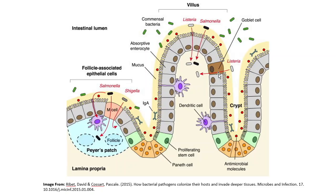Then we have the microbiome. You'll see up here it says commensal bacteria — that's what all these little green things are. That's all the good bacteria that live around and in your lumen of your intestine. That's your microbiome. Those bacteria make chemicals that talk to your immune system and tell it how to behave properly. They help you digest your food and help with a number of different functions inside your GI tract, so they're very critical.